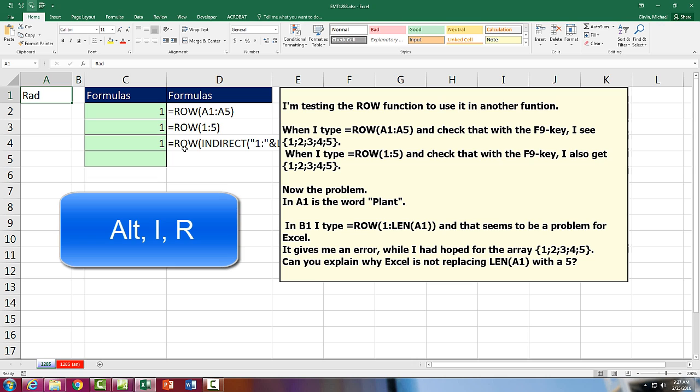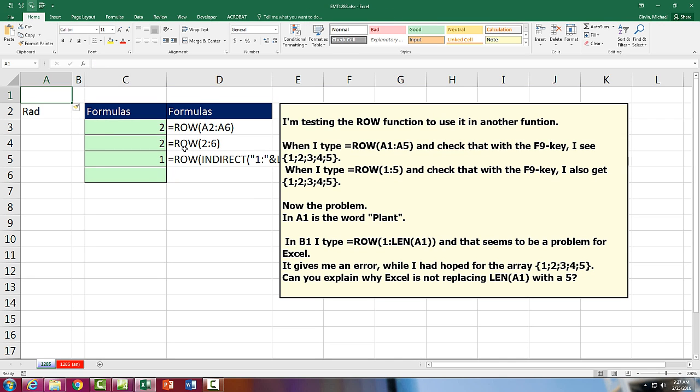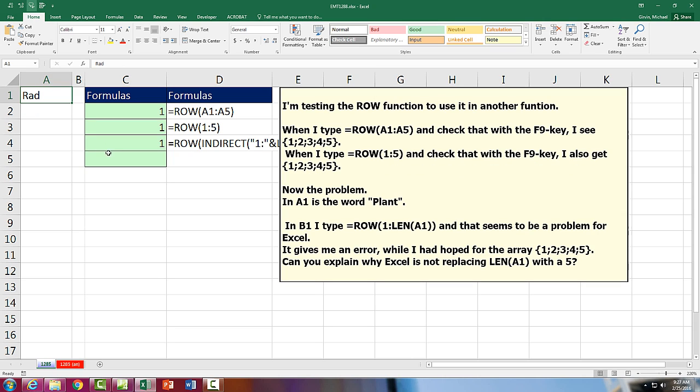And it simply is Alt-I-R to insert a row. So our job, if we're building spreadsheets, is to build them as robust as possible. And if we were to insert a row, it changes the output, F9, to a sequential array of numbers 2 to 6. Escape and same with this one, F9. So Control-Z.